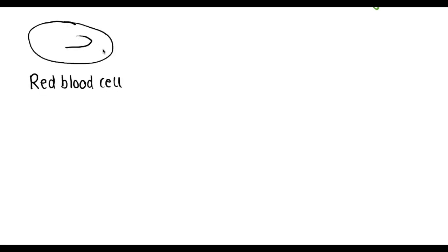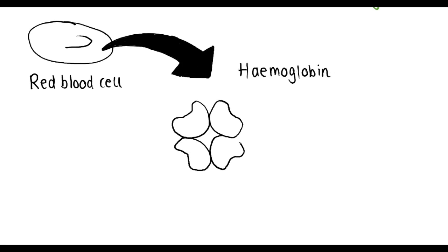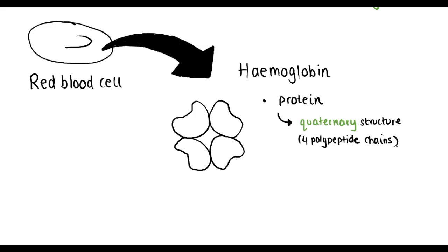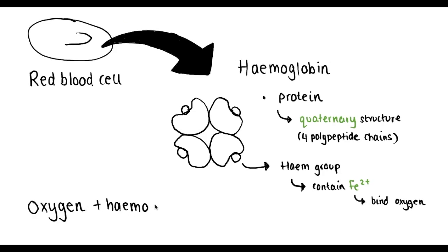Here we have a red blood cell, and our red blood cells are specialised to carry oxygen. They contain lots of a molecule called haemoglobin. Haemoglobin, as we can see here, is a protein made up of four subunits, meaning it has a quaternary structure — so it's a really large protein. Each of these polypeptide chains contains a haem group, and each haem group contains an iron ion, Fe2+, which is the part of haemoglobin that binds oxygen.